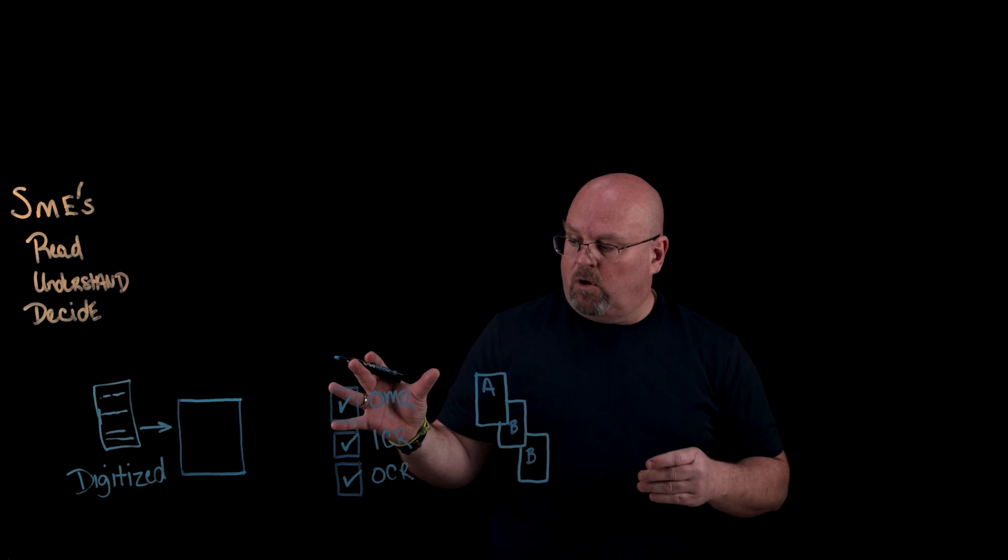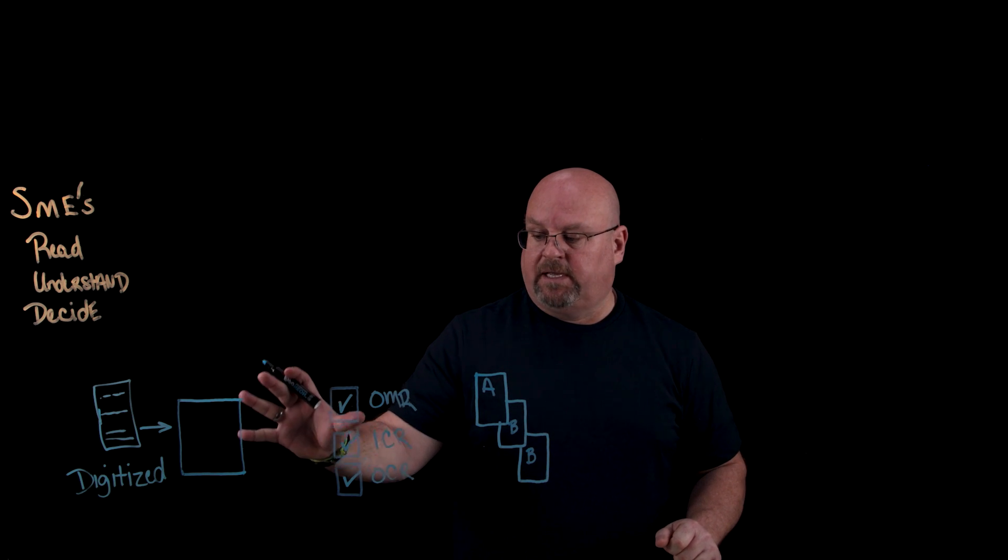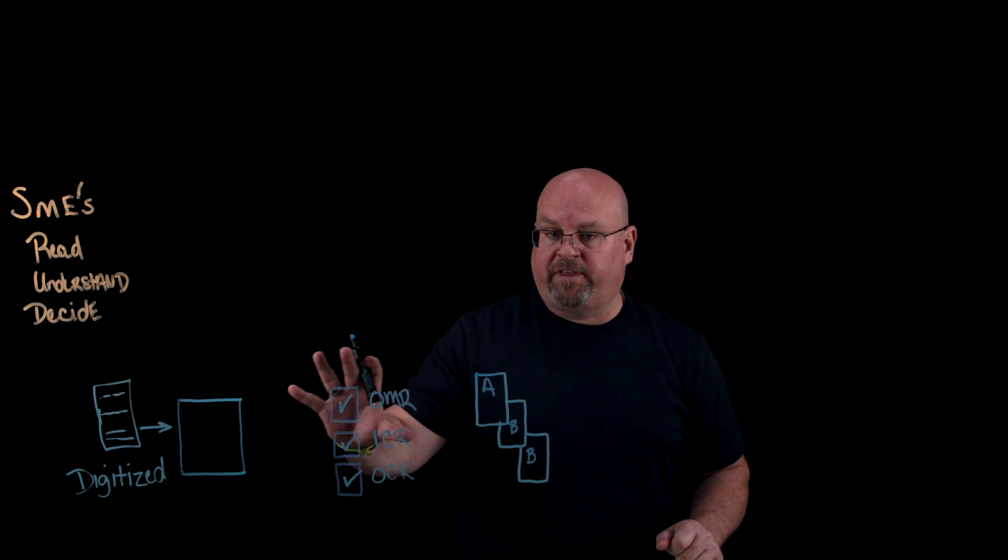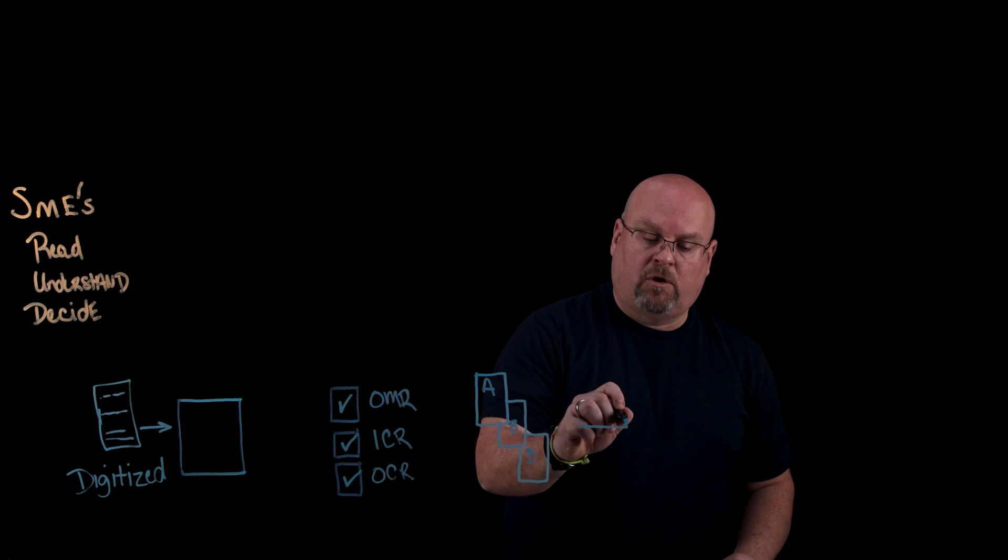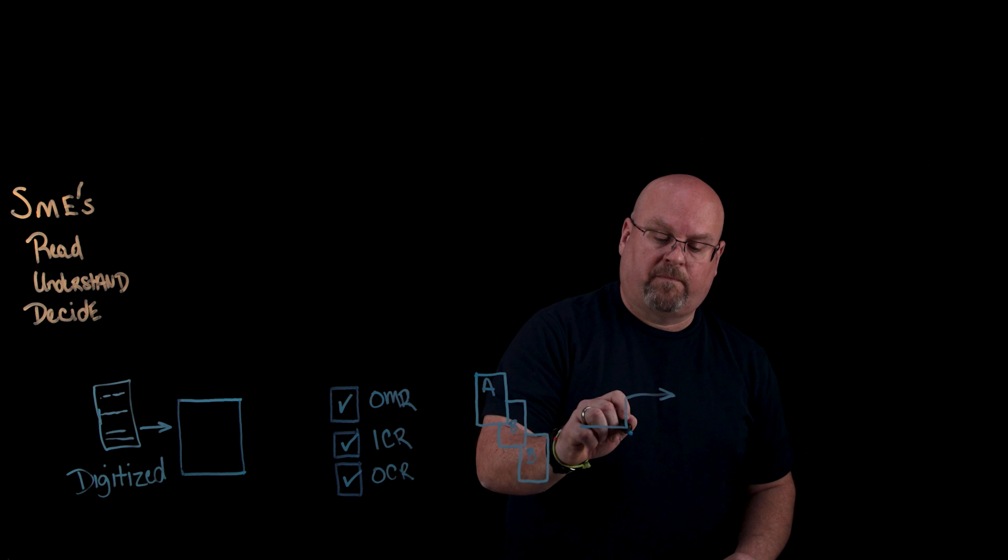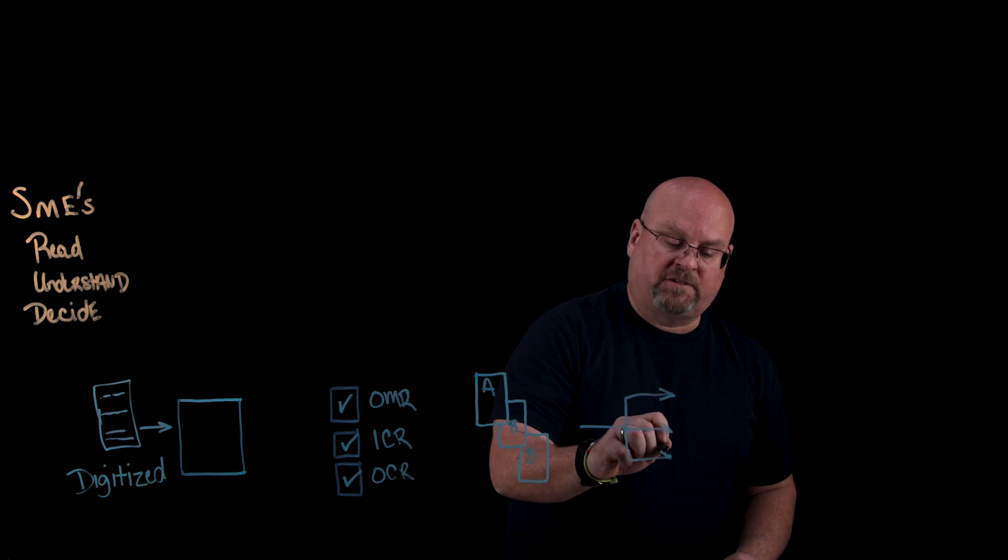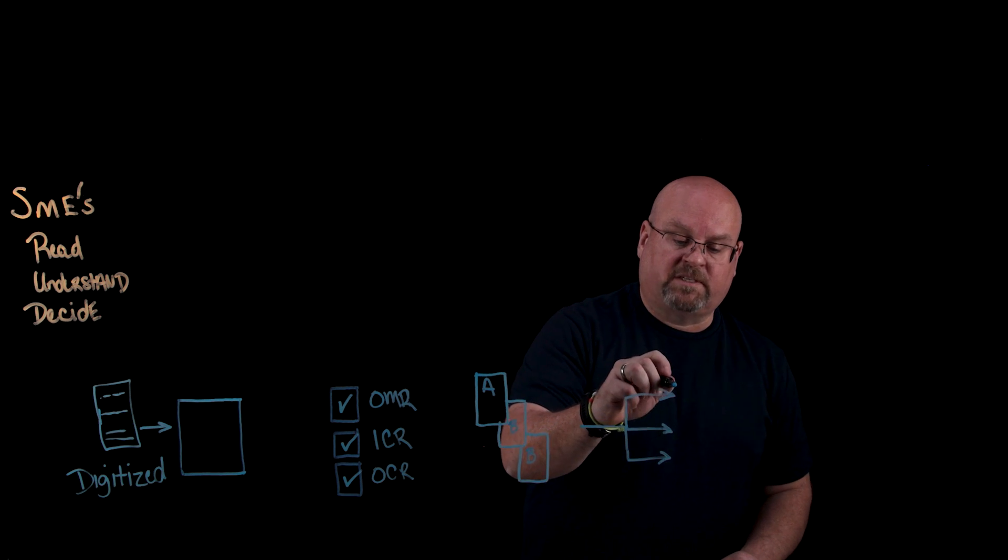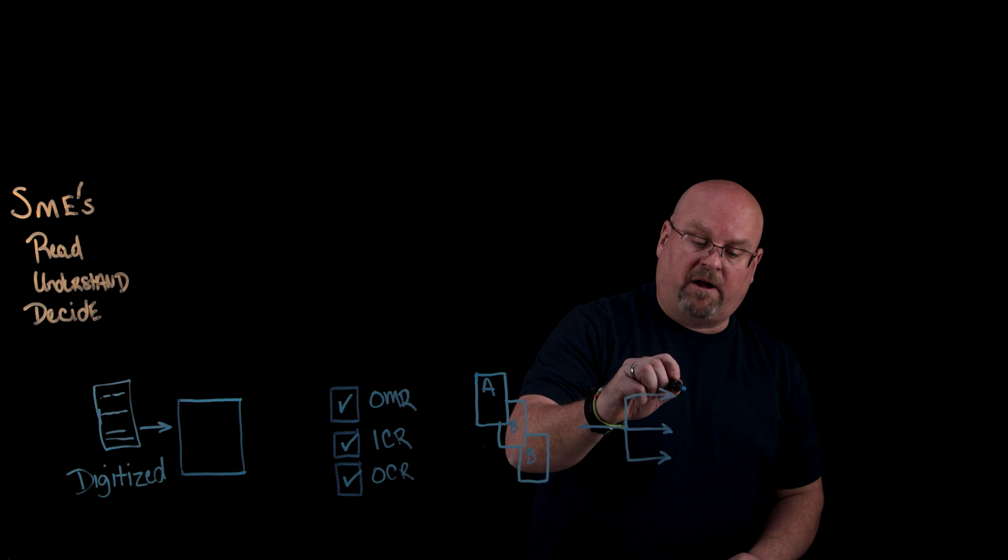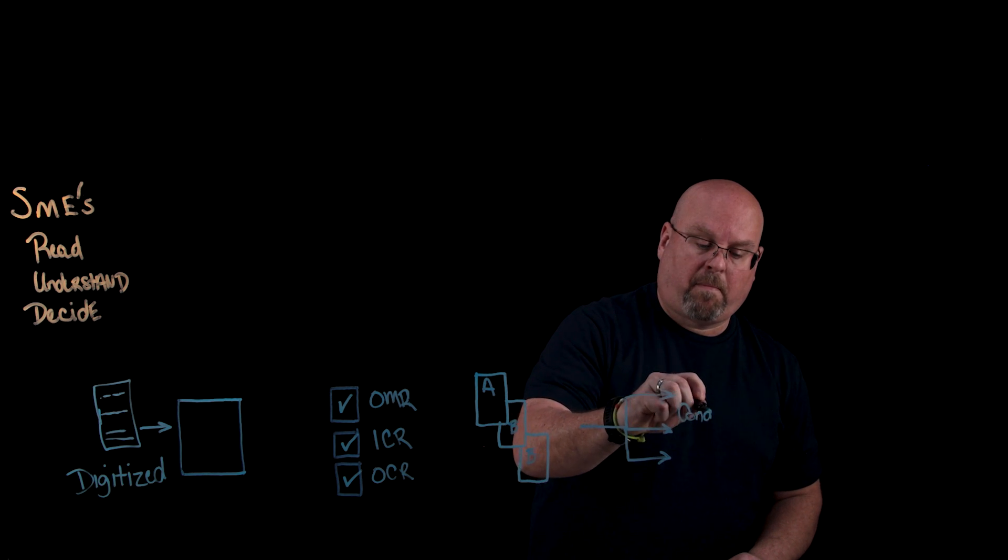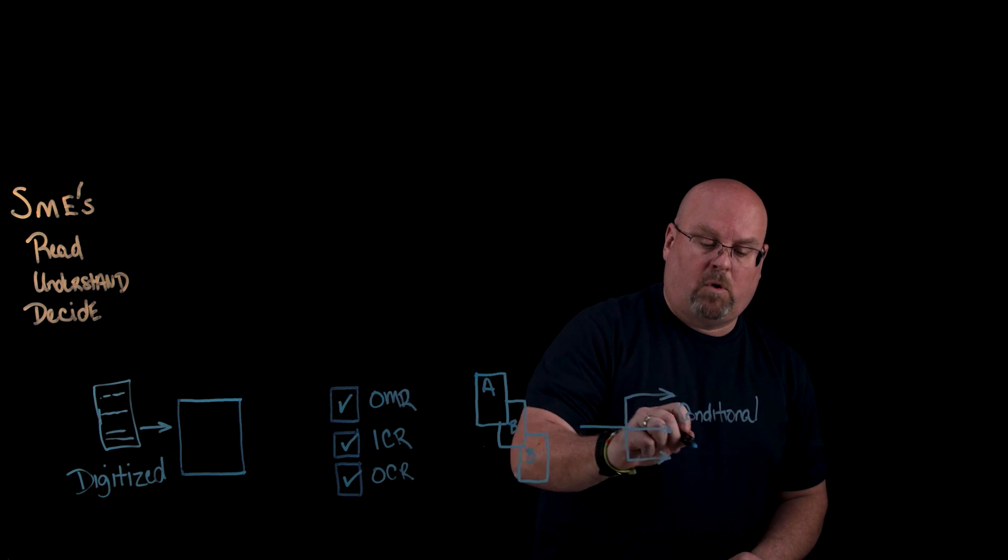We can also apply classification to identify which documents are which, thus assembling our continuous ingestion process. And when all of the content is processed with these rudimentary steps, we can then do routing and identify the next processing step and have either conditional routing or dynamic routing.